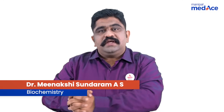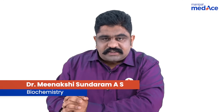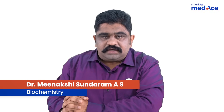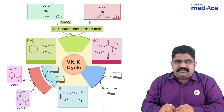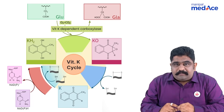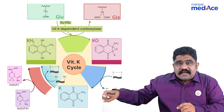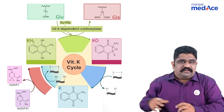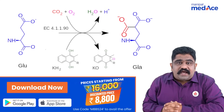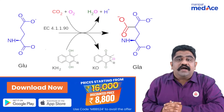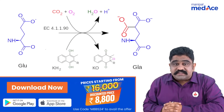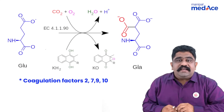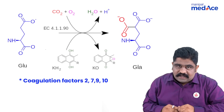Dear students, vitamin K is the vitamin that supports coagulation. Have you ever wondered why? Because the vitamin K cycle happens, and when the vitamin K cycle happens, another reaction also happens along with the cycle — the reaction where gamma carboxylation of glutamic acid residues present in factors 2, 7, 9, and 10 will happen.